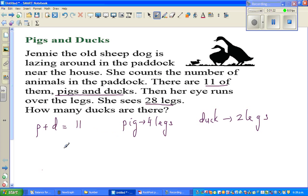So let us write total animals. Total animals, which is pigs plus ducks, pigs plus ducks. We're just writing the information that we have is 11. And total legs is 28.